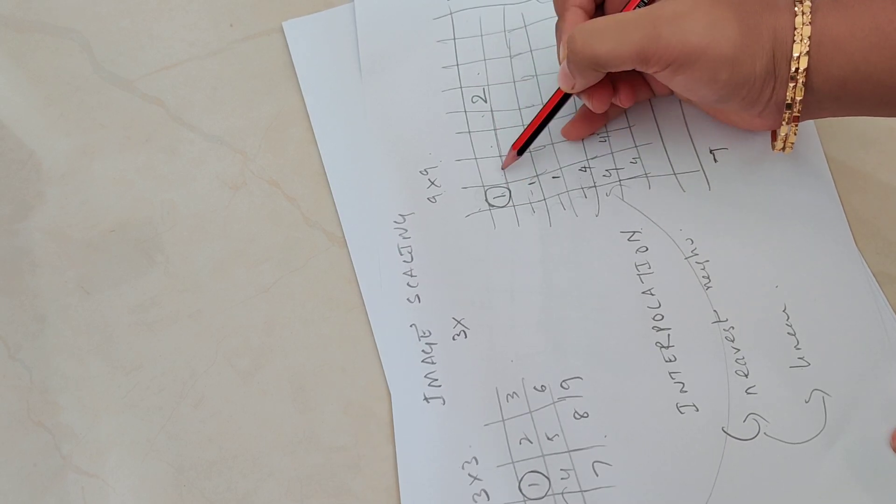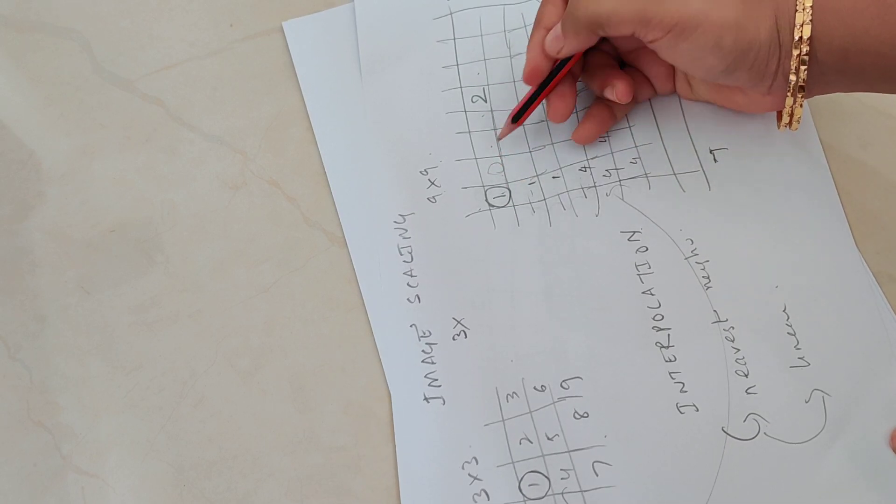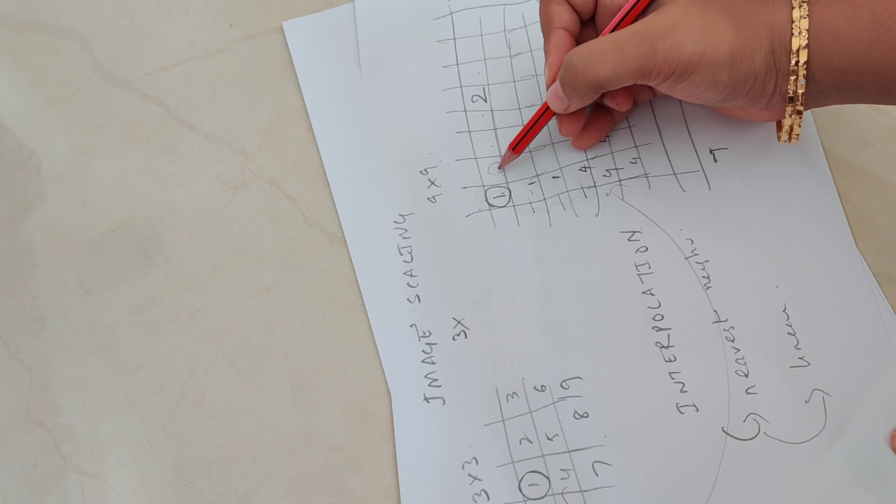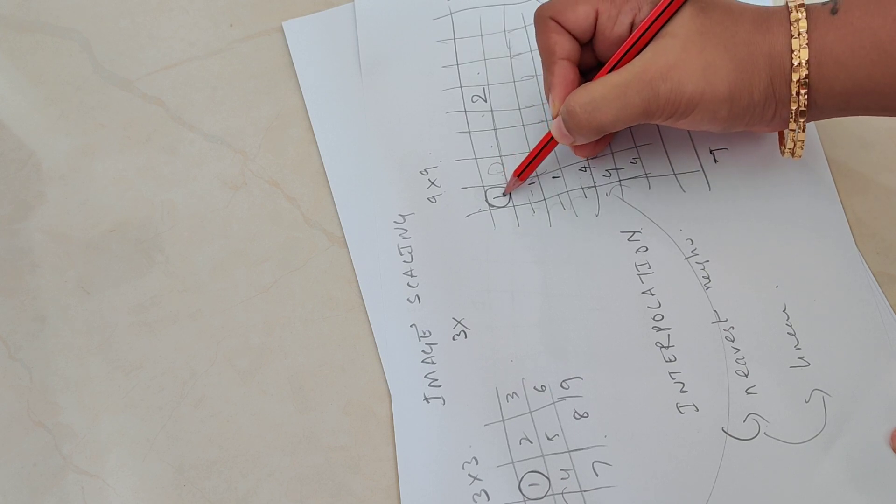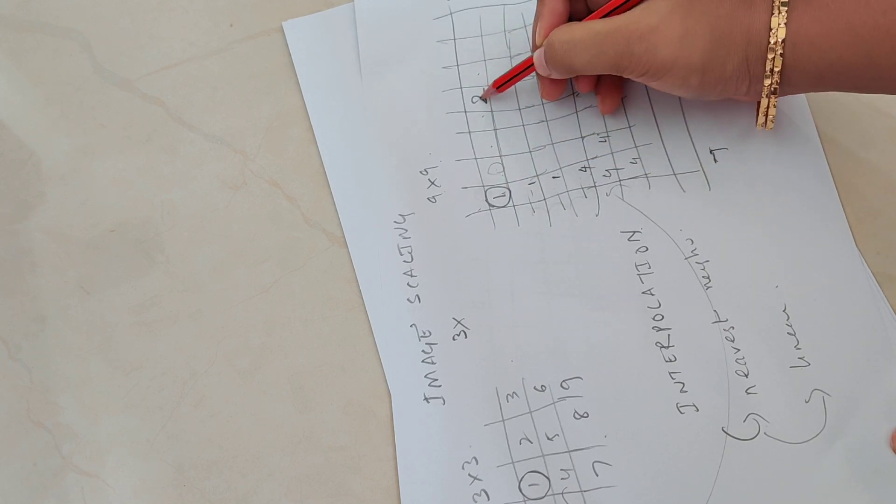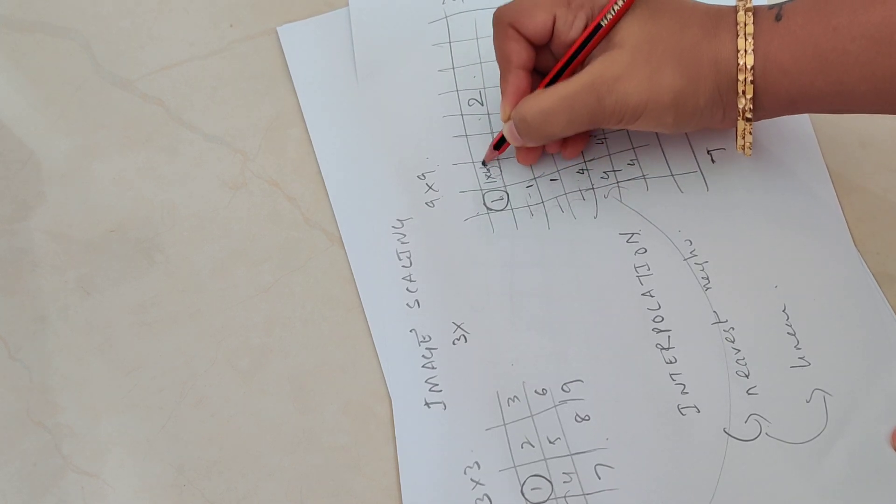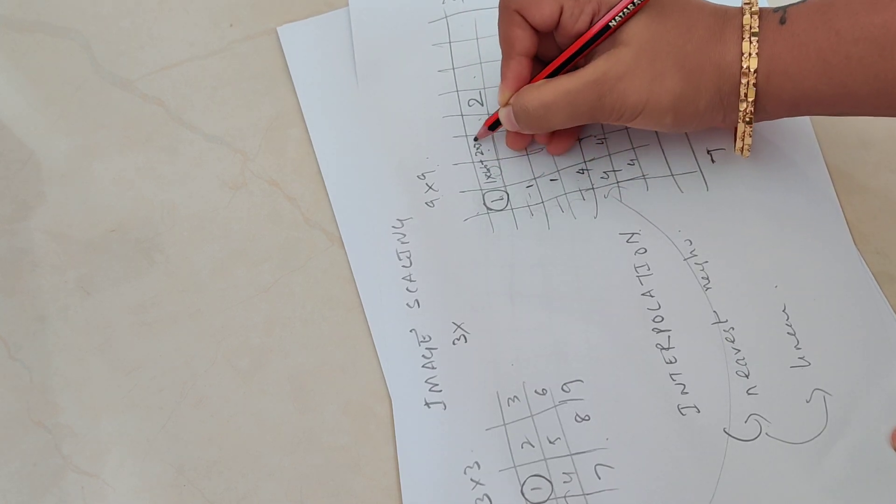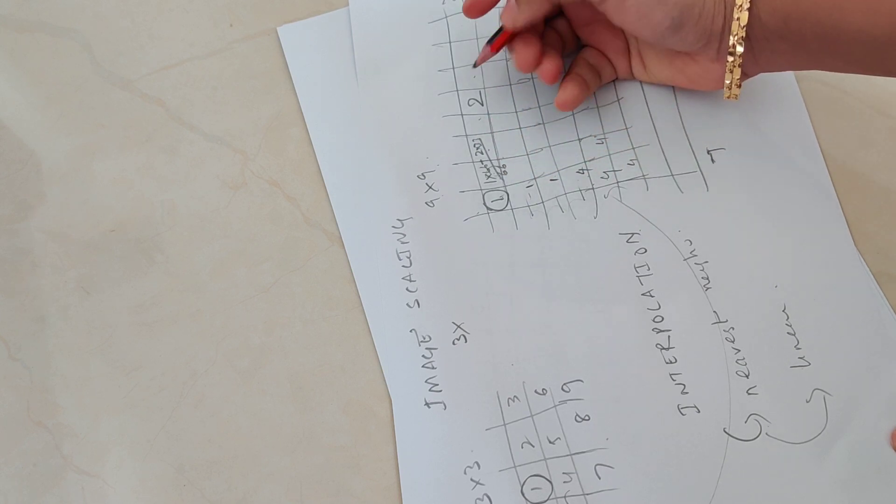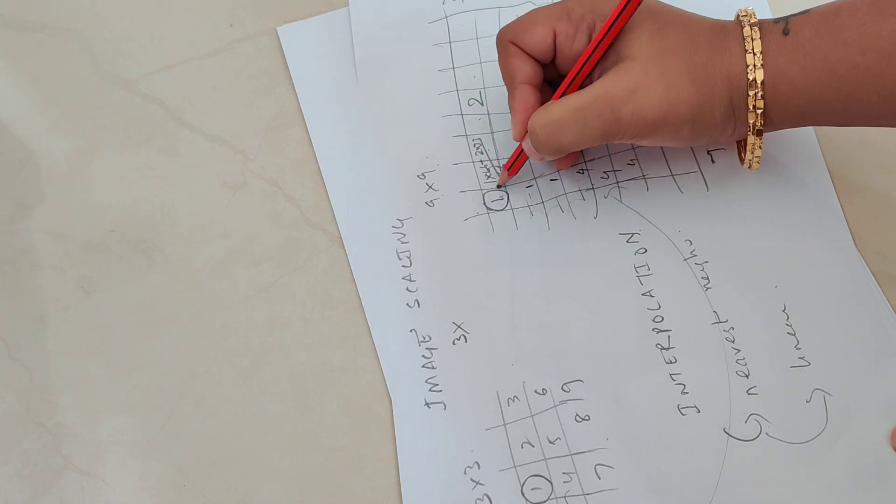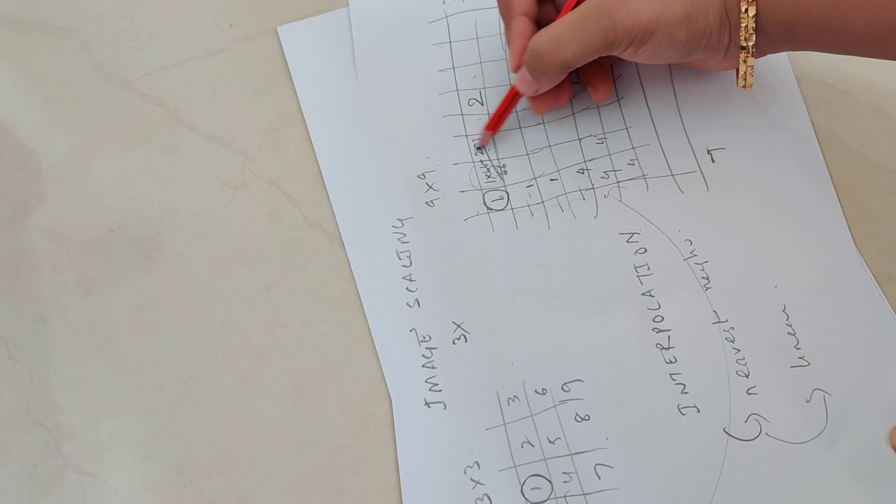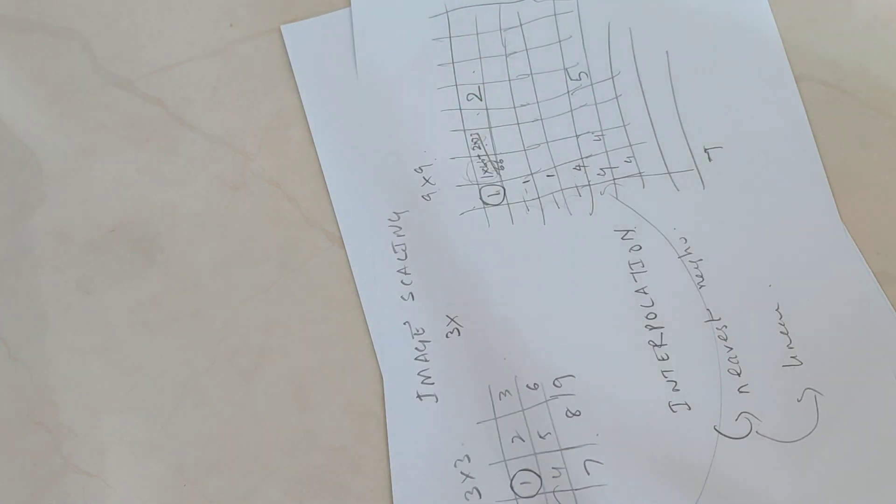If you look at this pixel, this pixel is 36 percent close to 1 and 33 percent close to 2. So its value will be 1 into 66 plus 2 into 33 divided by 66. So it does the weighted average for each of the pixels that needs to be filled in.